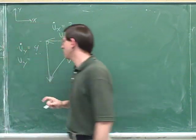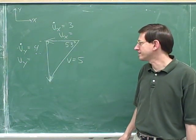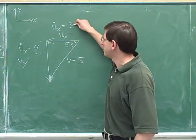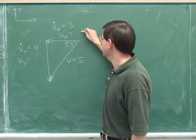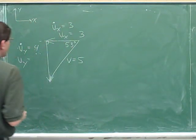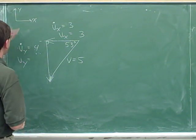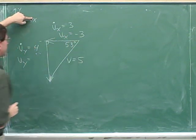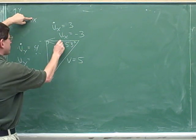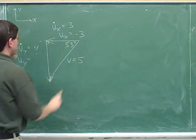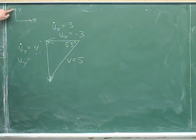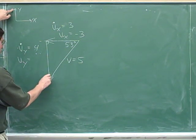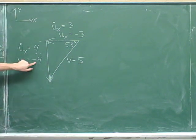Please pause the video and write down the signed components. The magnitude of the x component was 3, so you just need to figure out the sign. The positive direction is to the right, but the x component is pointing to the left — so this is negative. How about the y component? The positive y direction is up, but the y component is pointing down — positive is up, but the component is down — so this should also be a negative component.